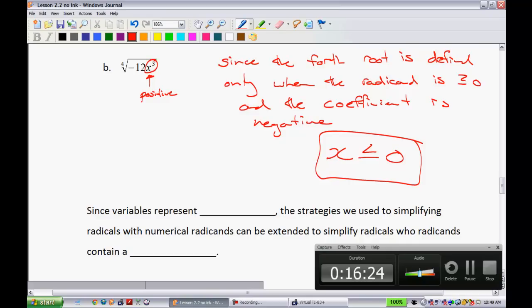A positive times a negative is going to give you a negative. But if you take the fourth root of any negative, it will not work. Whenever you have an even power, you cannot have a negative inside the radicand. So therefore what we know is that we must make sure that x is negative.